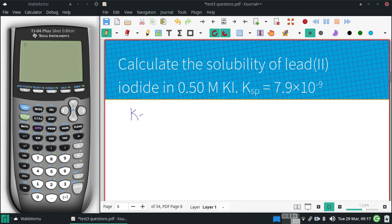All right, the Ksp of lead(II) iodide is Pb²⁺ times I⁻, and I is minus one, so this would be squared.